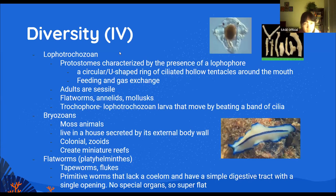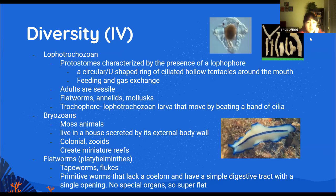Lophotrochozoans — a lophophore is a feeding organ, like a mouth, except imagine around the mouth you have little tentacles and rings surrounding it. It helps with feeding but also gas exchange. All lophotrochozoan adults are sessile, meaning they cannot move. These organisms include flatworms, annelids (which include earthworms and leeches), and mollusks (such as octopuses, bivalves, and clams).